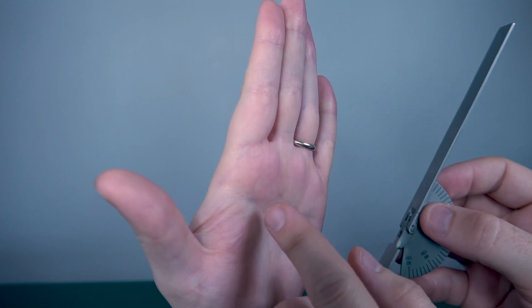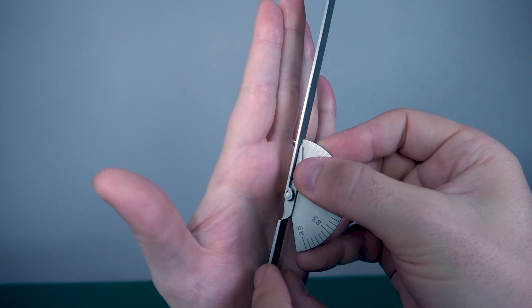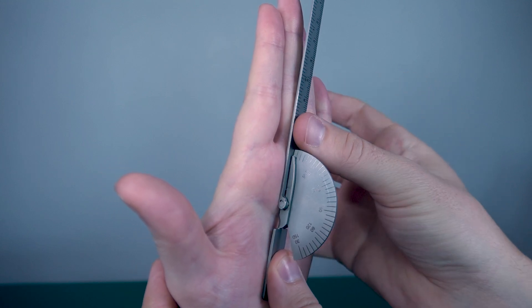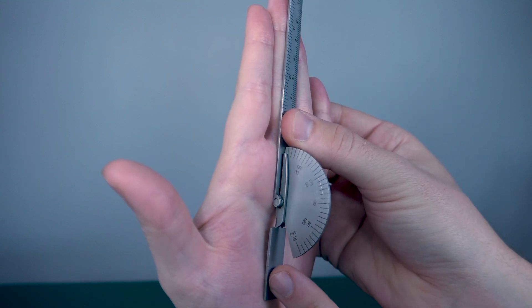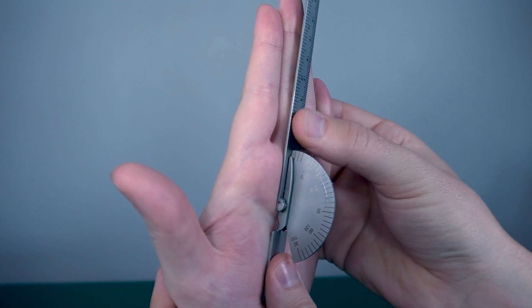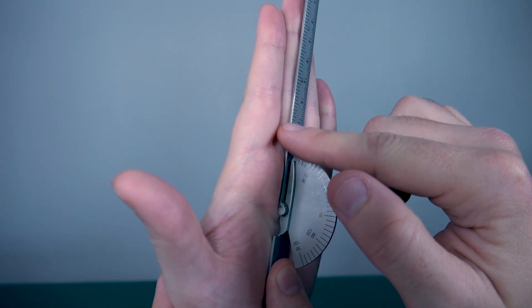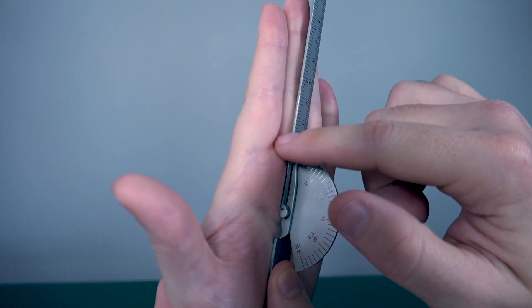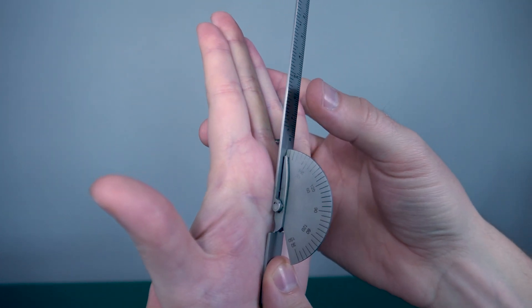on the third metacarpal. I'm going to place the axis of the goniometer on the MCP joint, the stationary arm on the metacarpal, and the movement arm on the proximal phalanx. Okay Rachel, I want you to extend your hand backwards as far